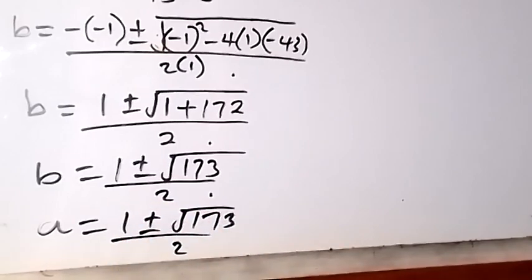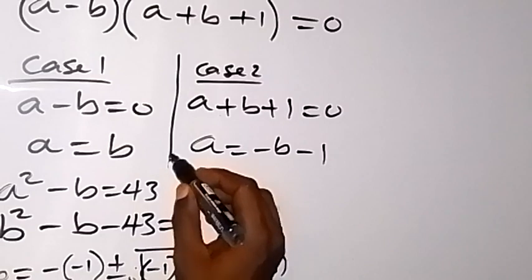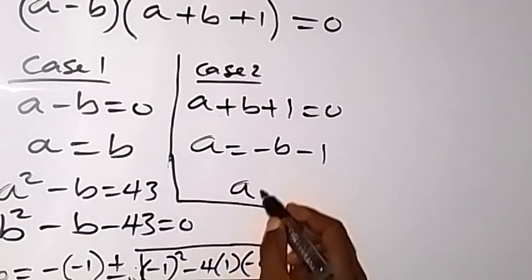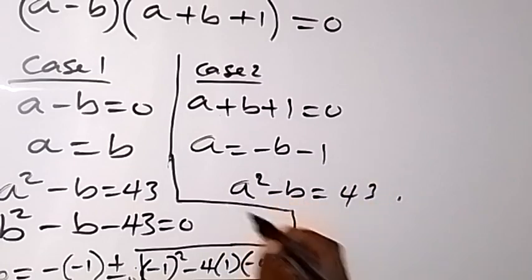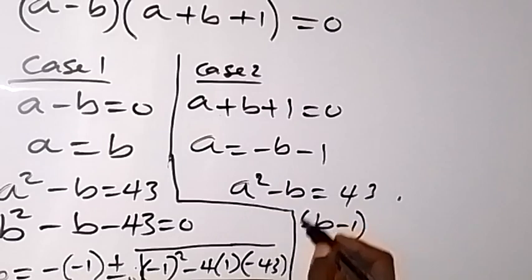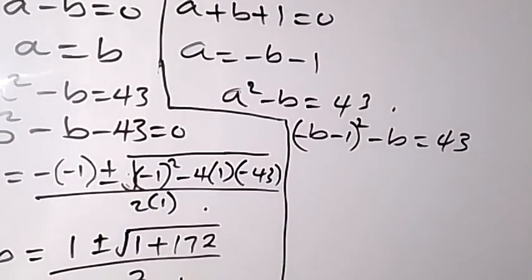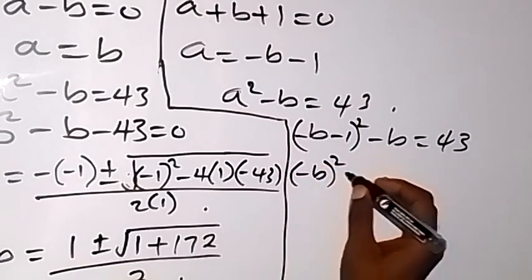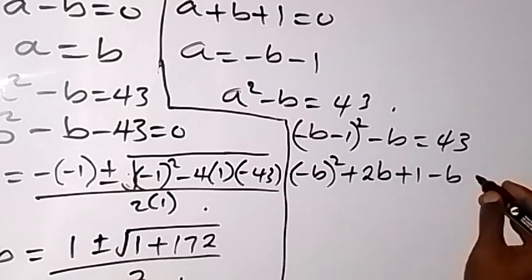Now let's check the second case. We have a equals minus b minus 1. From equation 1, a squared minus b equals 43. When we substitute for a, we now have minus b minus 1, squared, then minus b, equals 43.